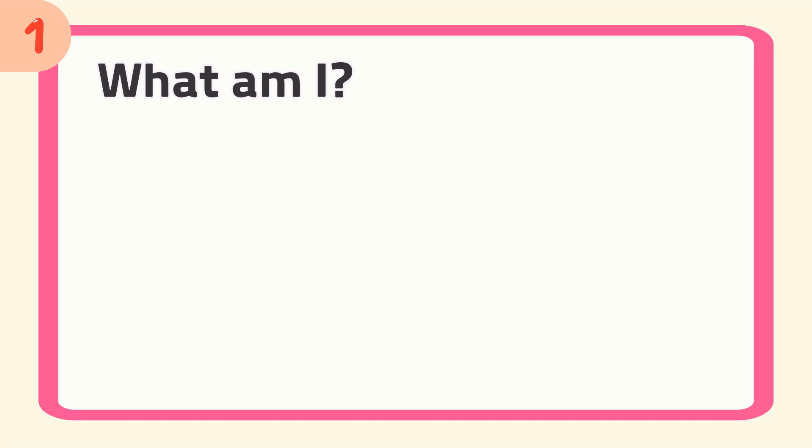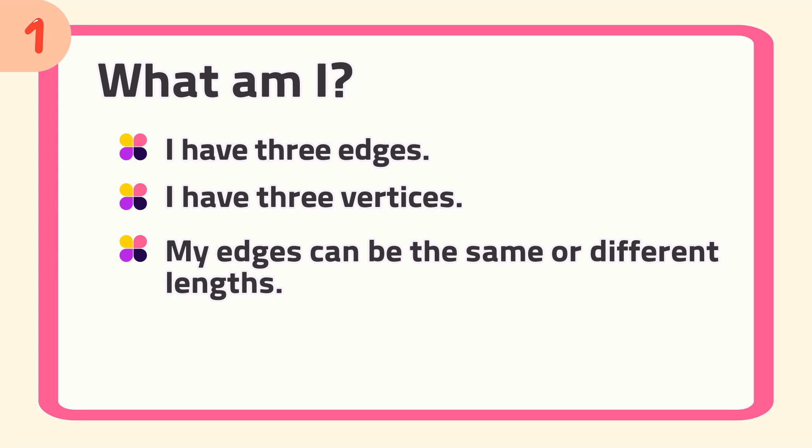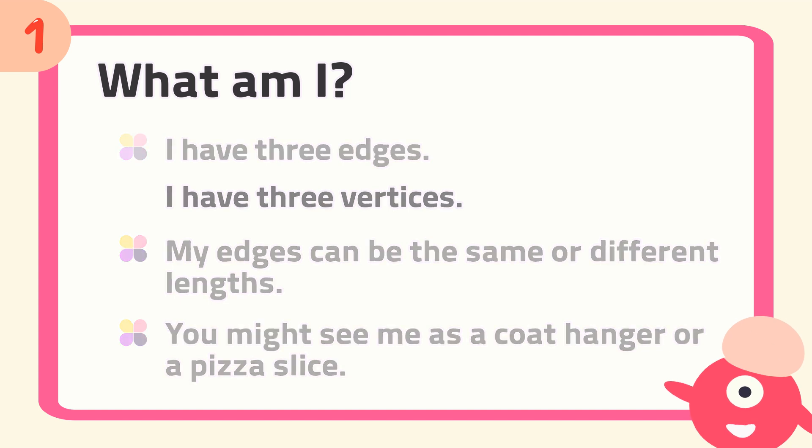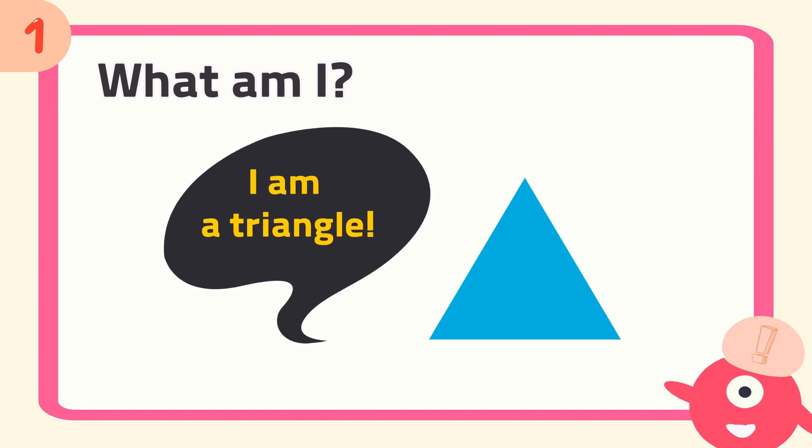Number one, what am I? I have three edges, I have three vertices, my edges can be the same or different lengths. You might see me as a coat hanger or a pizza slice. The answer is, I am a triangle.